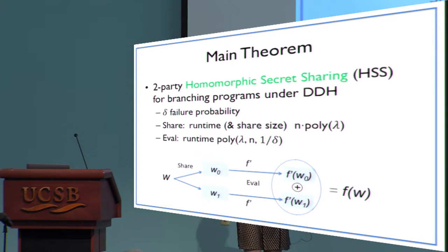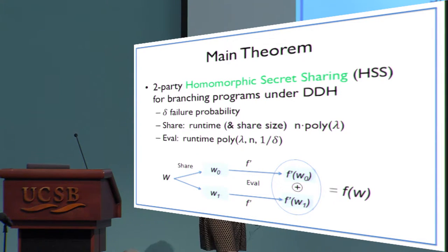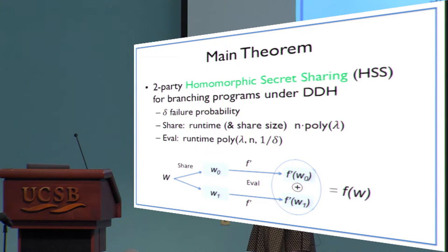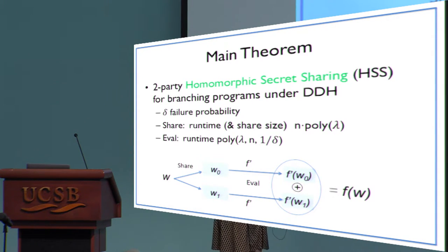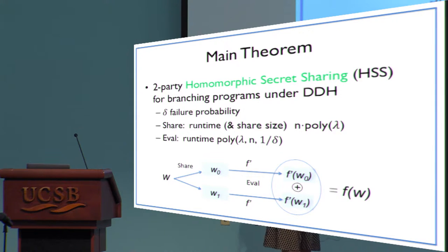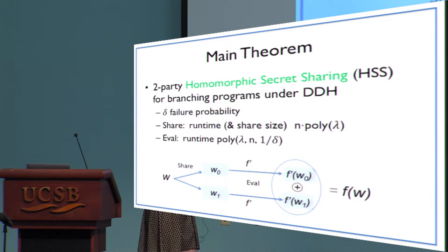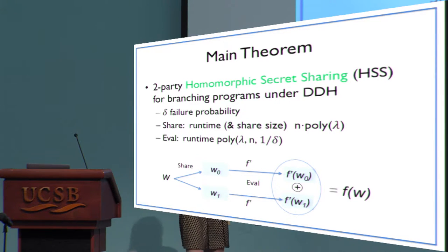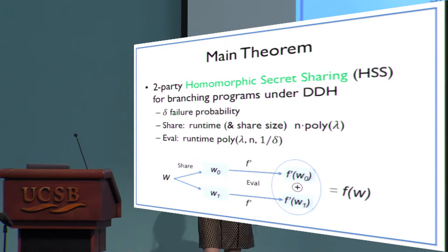Throughout the talk, w represents an input. You can consider more general reconstruction procedures, but it is convenient and gives further applications to consider explicitly just addition. One benefit is that the output shares are literally elements of the output space of the function — so for example, if my function f outputs a single bit, then the shares we have to exchange are literally one bit, not even an encryption, just one bit. We achieve this for the class of branching programs with a noticeable failure probability delta that you can trade off against runtime.